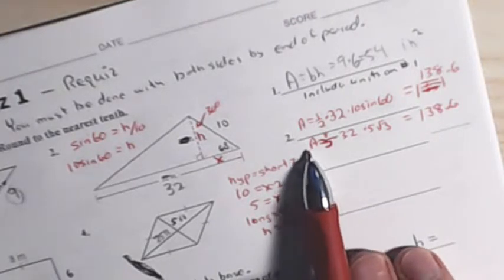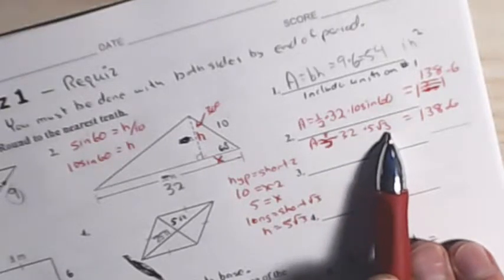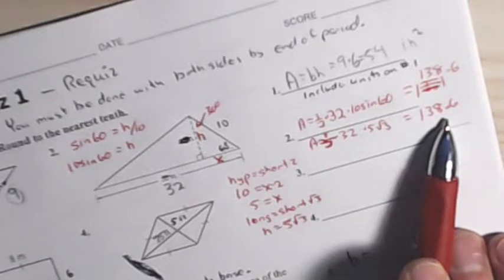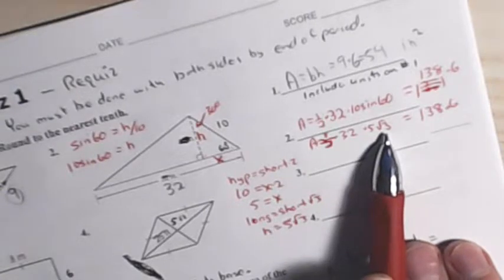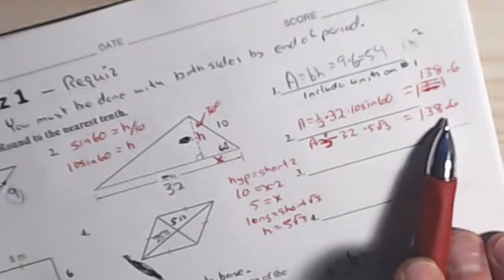This is area equals 1 half 32 times 5 root 3. If you put that in your calculator, you'll get 138.6 to the nearest tenth. Now it's also worthwhile to know I did not round off that square root 3 to a decimal at this point. Otherwise, I'll lose accuracy when I multiply. I kept it exact to that point. Now I'm going to be good to the nearest tenth at the end.